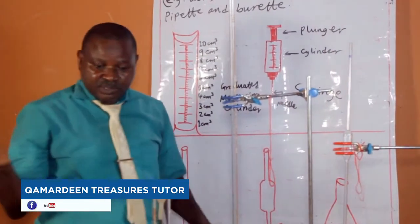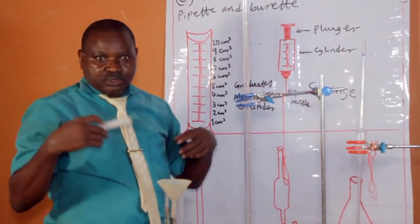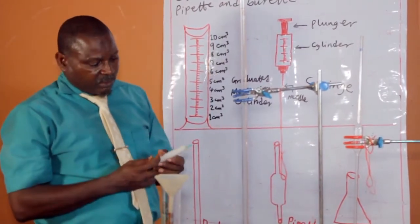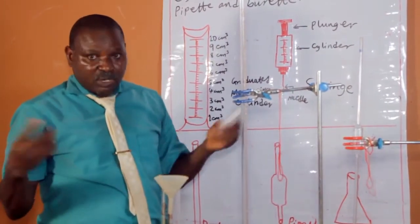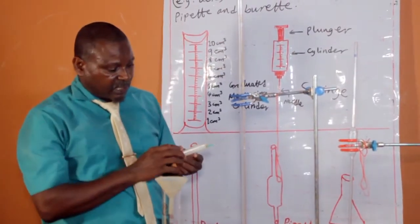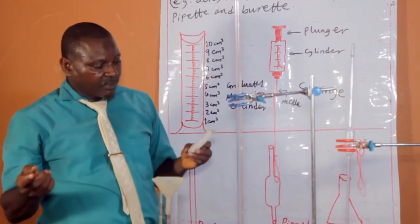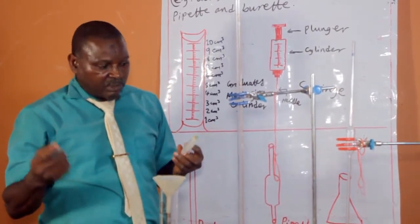Syringe is available in a pharmaceutical shop around you. You can get it 100, 200 and 300 naira depending on whether it's a medium, small or large.